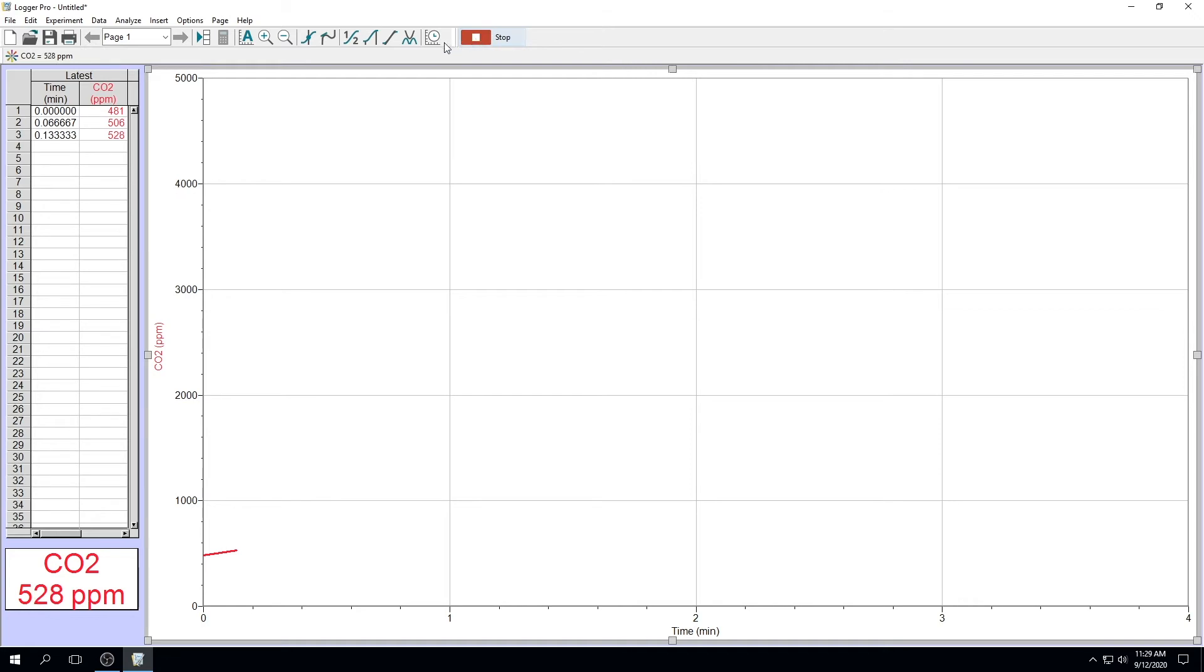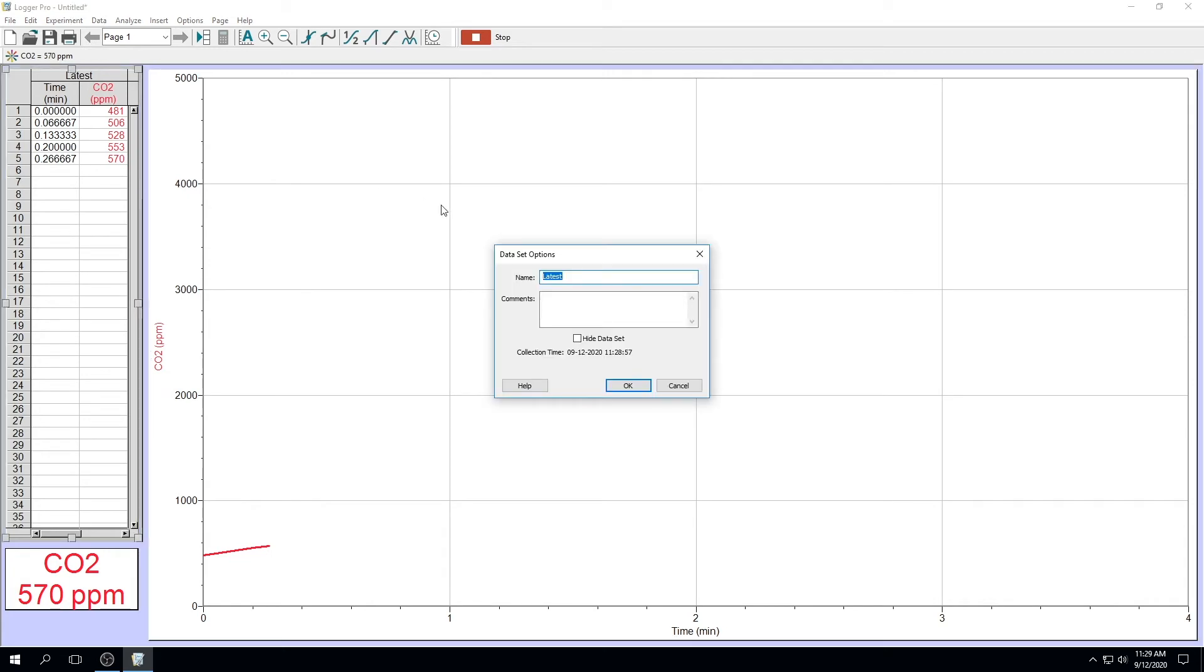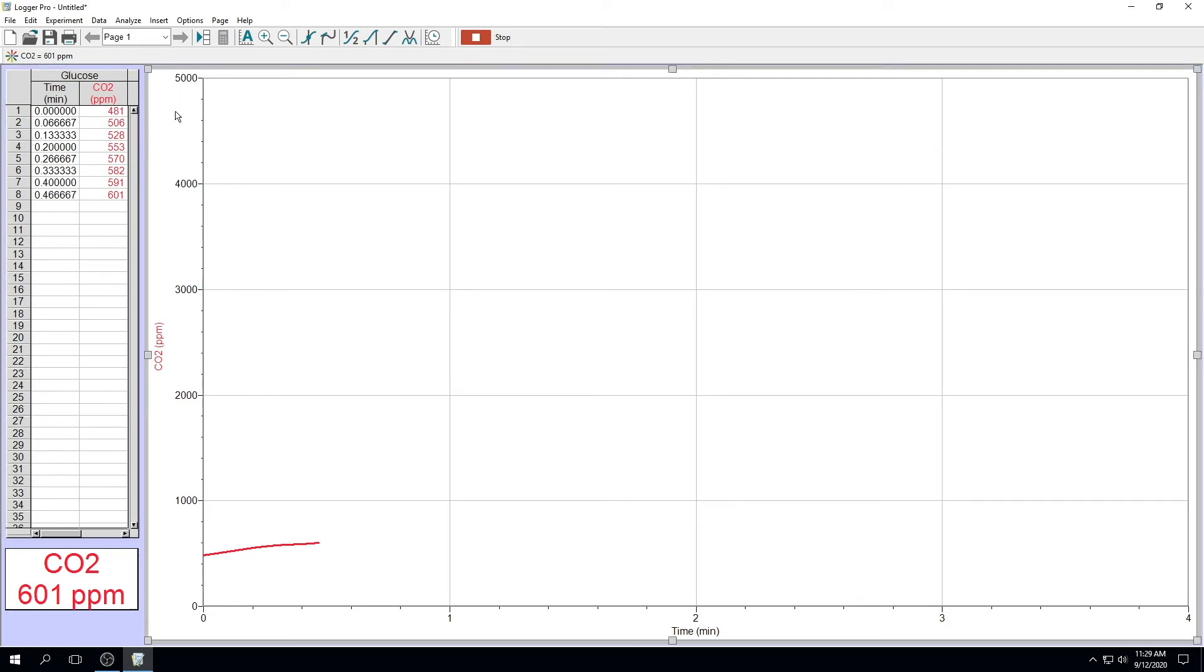While your data is collecting, you can change the name of the column to keep track of which sugar you're examining. So you can double click on the column and change the name to glucose. This will help you keep track of which data set belongs to which sugar.